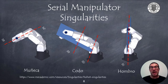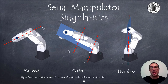Serial manipulator robots have three types of singularities: wrist, elbow, and shoulder singularity. Wrist singularity occurs when axes 4 and 6 are aligned as a consequence of the well-known gimbal lock. The singularity of the elbow appears in the change between the elbow-up and elbow-down configuration, just when the wrist point is contained in the plane formed by axes 2 and 3. Finally, the singularity of the shoulder appears when the point of the wrist passes through the first axis of the robot.